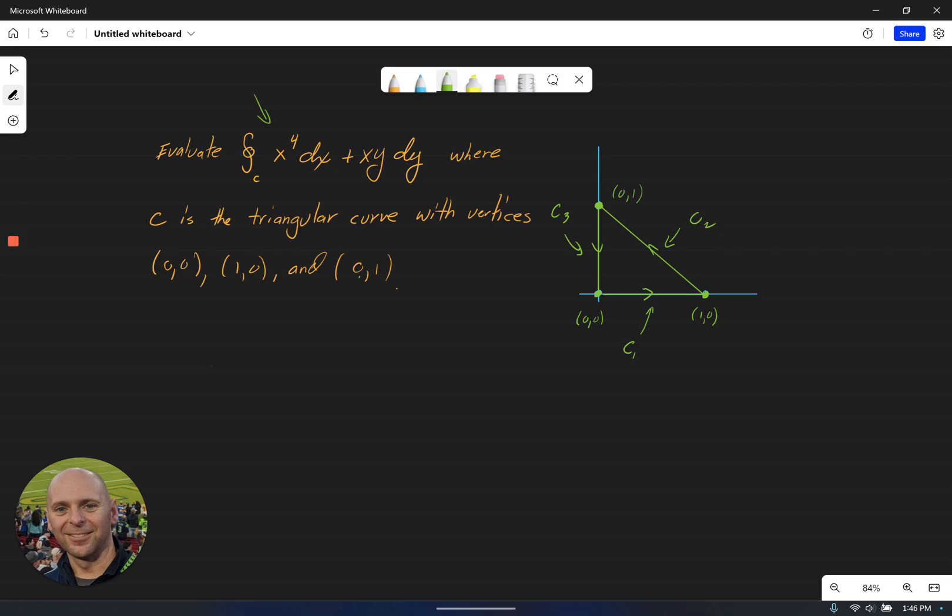Now that we have Green's theorem, we have a better way to do this. In some ways, it may seem a little counterintuitive because we're actually going to convert this to a double integral, which may seem like we're making it worse. Remember, computing this directly would require that we have three separate single integrals and the work of parametrizing those individual curves.